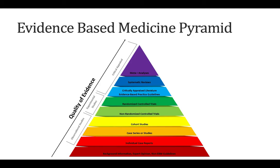Another factor to keep in mind is what type of studies you'll need to answer your questions. What we have here is called the evidence-based medicine pyramid. The idea is that as we move up the pyramid, the quality of the evidence increases and the number of studies available in those upper categories decreases. At the bottom we have things like background information, expert opinion, and non-evidence-based medicine guidelines — these could be precursors to clinical studies, or based on your own hospital's collection of data and experiences in clinics.